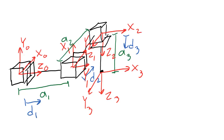Let's take a look at some displacement vector examples. Here I'm showing the Cartesian manipulator. Let's start by taking a look at the displacement vector from frame 0 to frame 1.